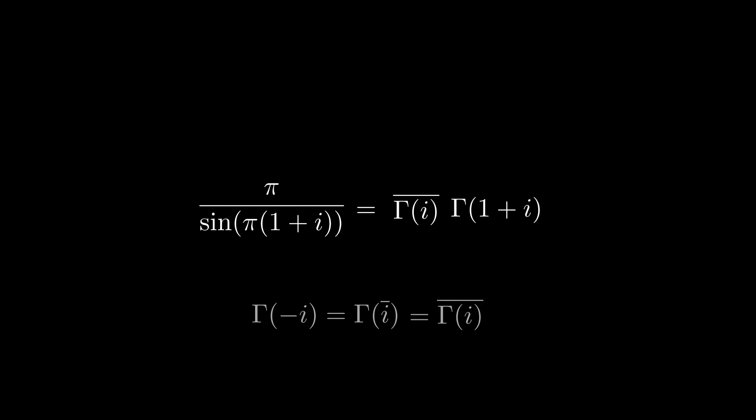Now, I'll use the recursive definition of the gamma function on gamma of 1 plus i. That's the same as i times gamma of i like before. So, this turns into i times gamma i times conjugate gamma i. Why is that nice? Because we can apply that property of conjugates. z times z conjugate is the modulus squared, the absolute value squared. So, i times the absolute value of gamma i squared is this recursive relationship.